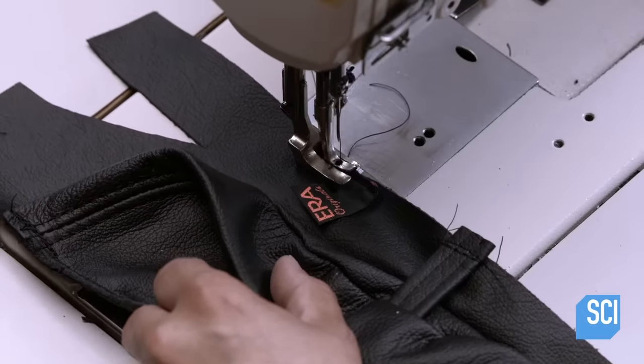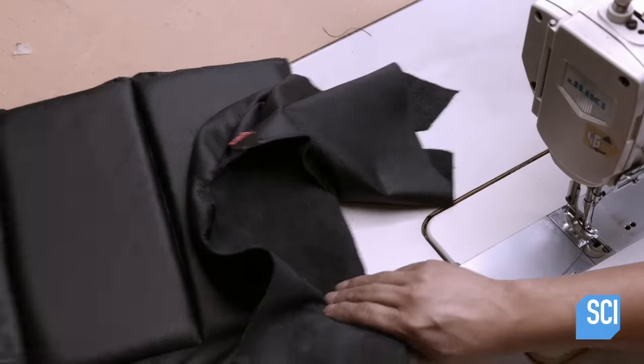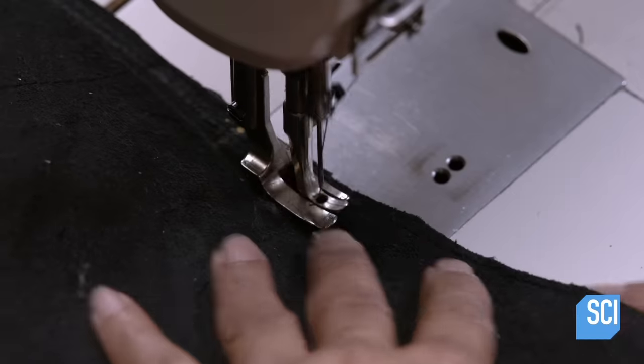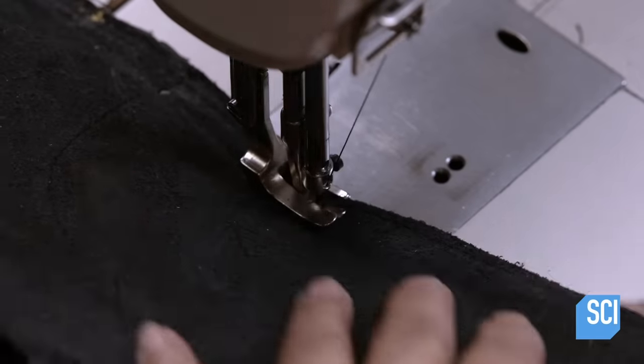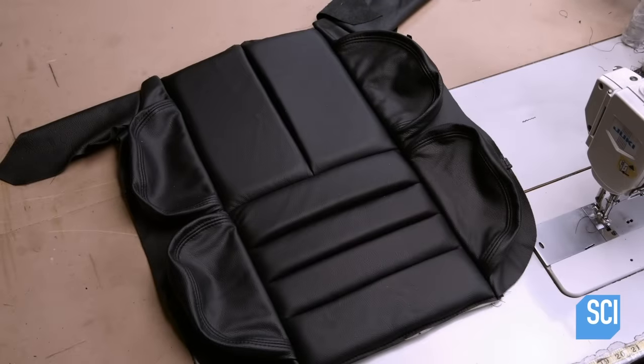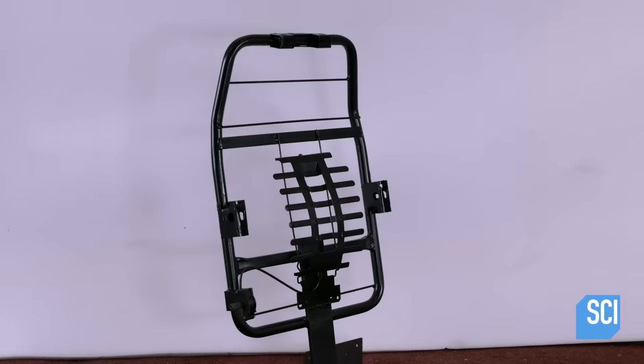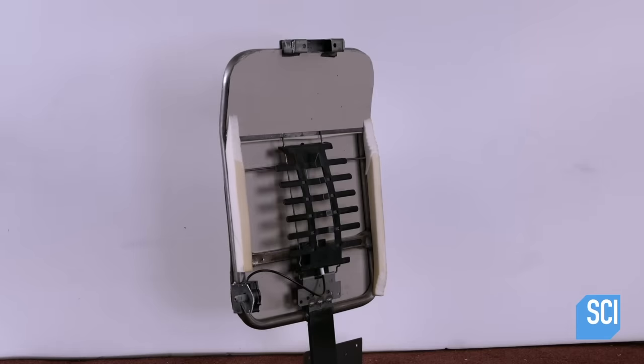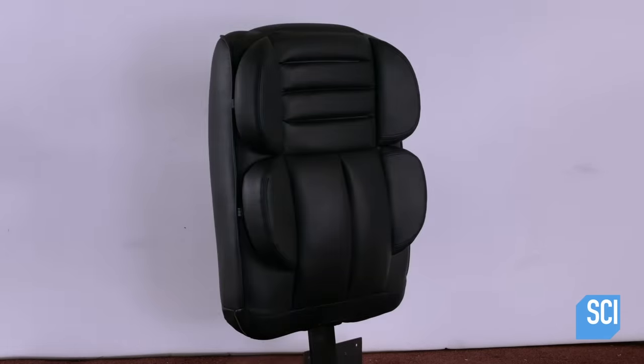Returning to the upholstery with the ribbing, he sews contoured casings to each side. To complete the back of the chair, workers add a chipboard panel and encase the structure with foam, then cover it with the leather upholstery.